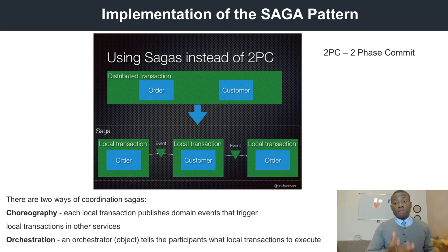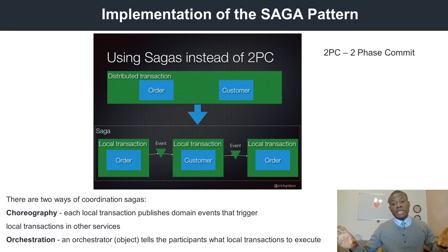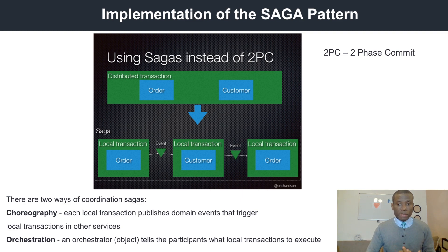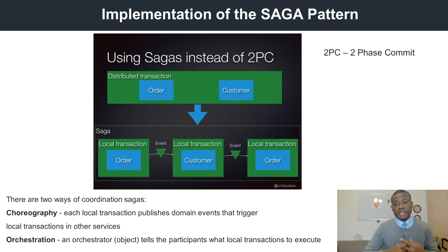This is a big picture of how microservices work when we are focusing on transactions that have to access data from different distributed databases — even a combination of data from different database platforms, maybe NoSQL, maybe SQL. There are two methods: we have choreography and we have orchestration. We've talked about choreography — you can look at the link in the description box for an explanation of how choreography works.